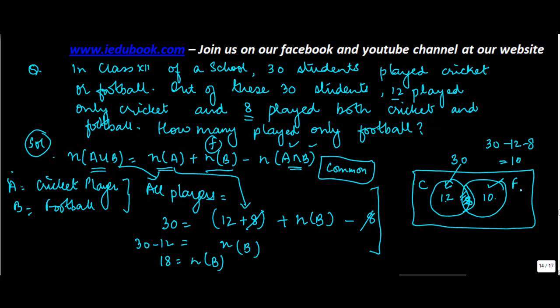Now, 10 students play only football and 8 play both football and cricket. So the total number of football playing students will be 10 plus 8 is equal to 18, which is also what we got here.